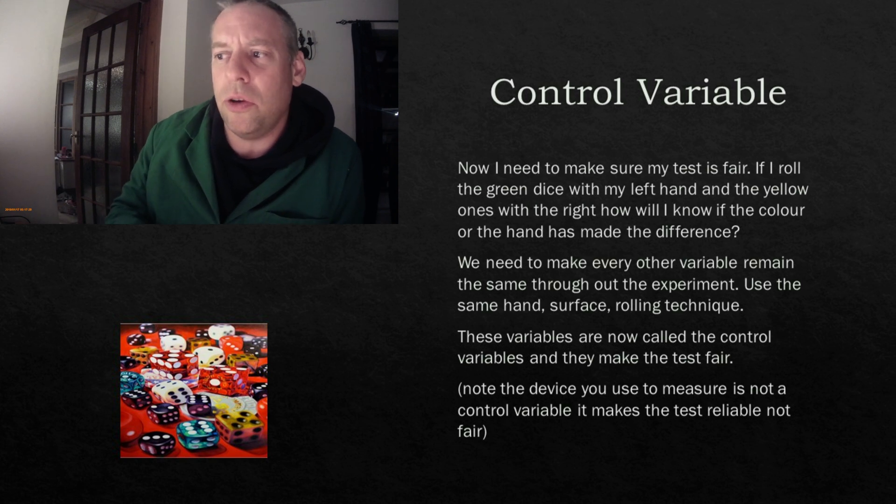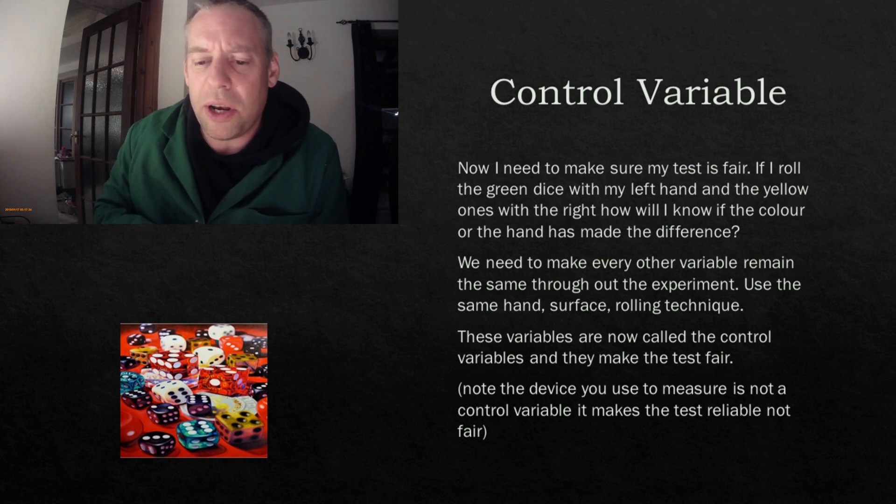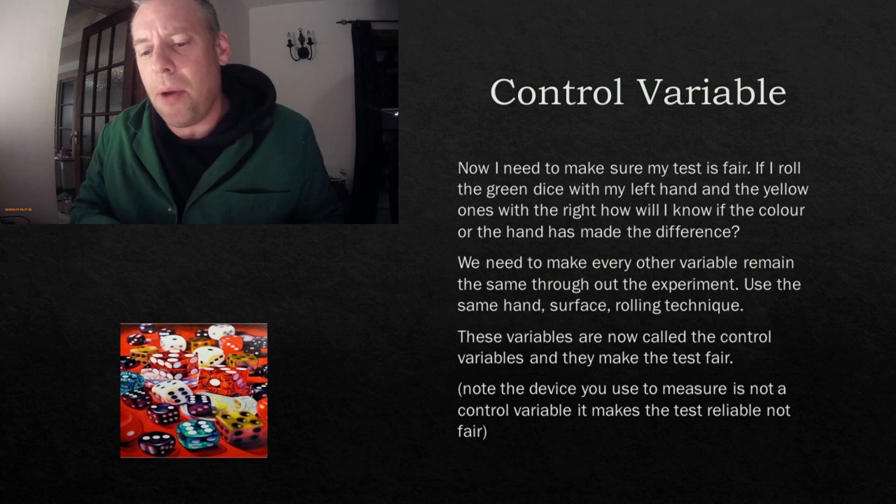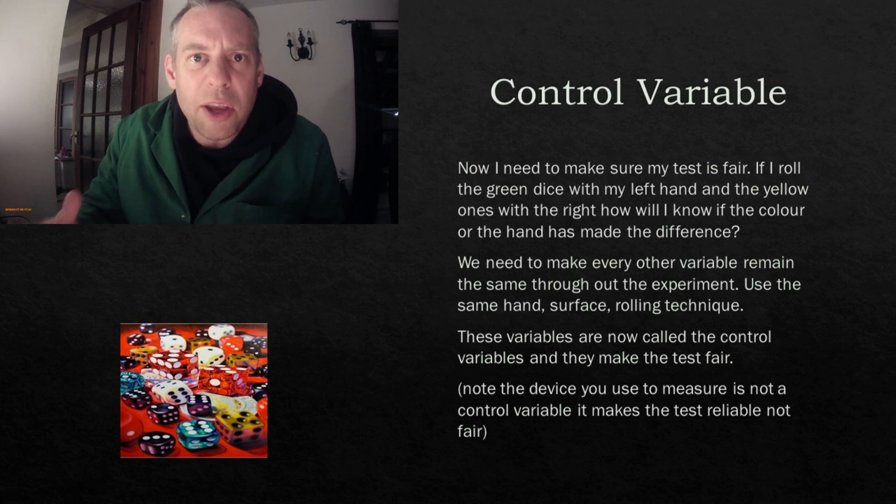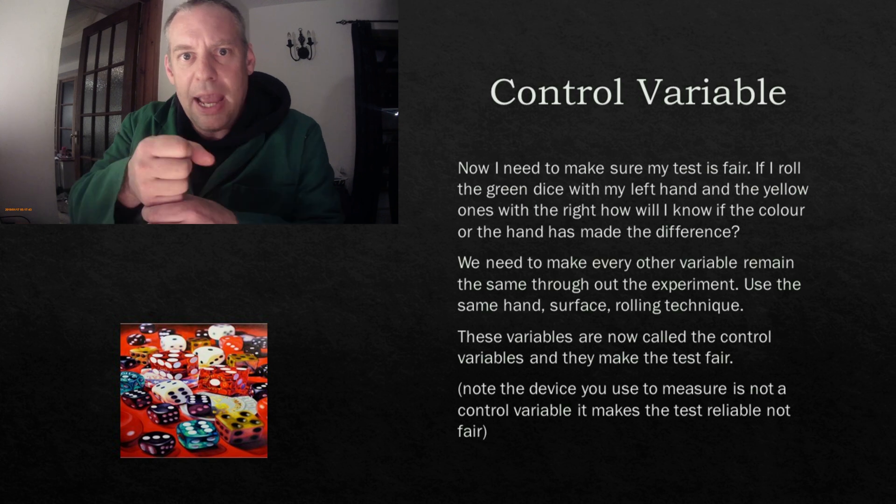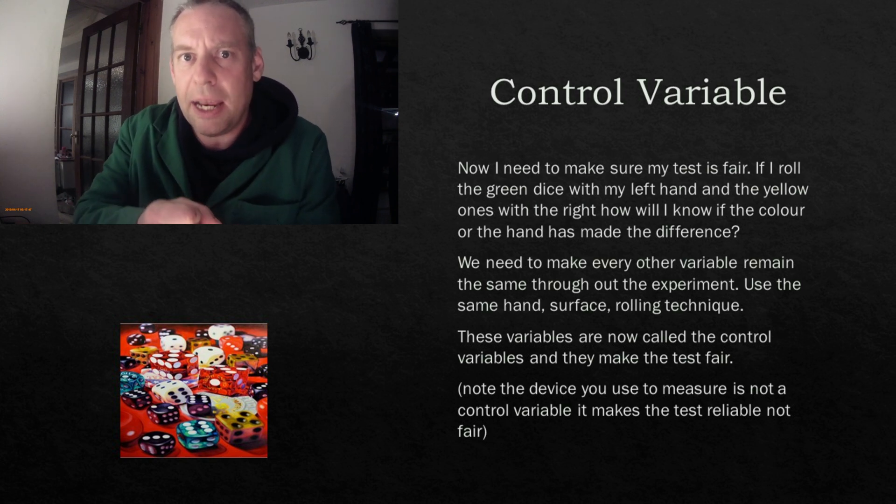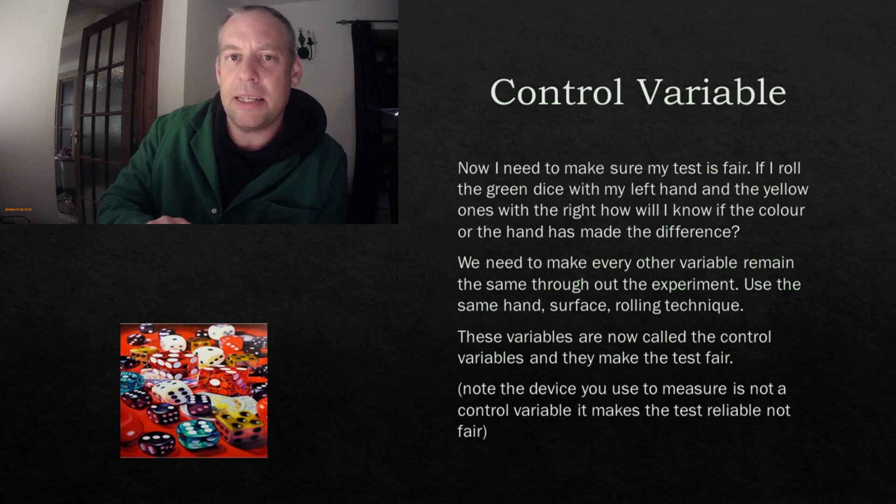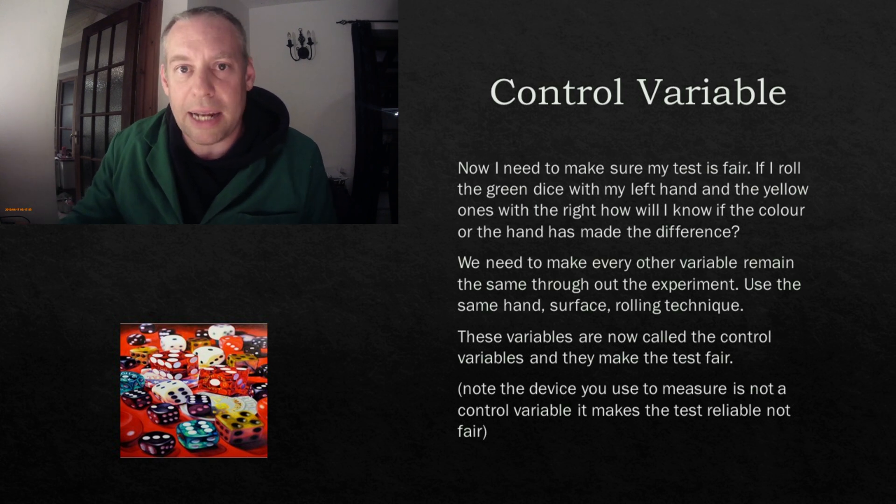Nothing to do with fairness. I would still have the same number of sixes as I had before. So the device you use to measure it, that is not making it fair. And I see this in exam papers. A good example, when you're seeing an exam paper, it might ask: how can you keep this experiment where you're measuring the heat being lost in an insulation experiment? And people put, you should keep the thermometer the same. That does not affect the fairness of the test. That affects the reliability. So I just wanted to include that at that point.